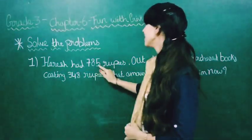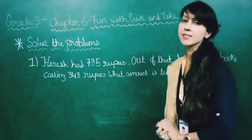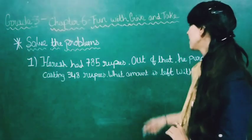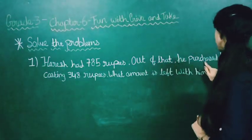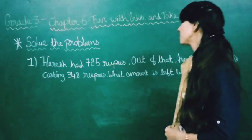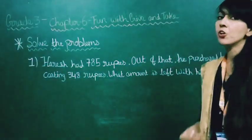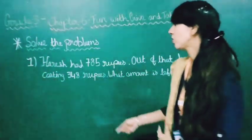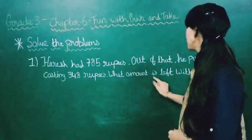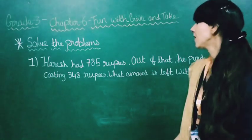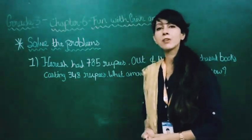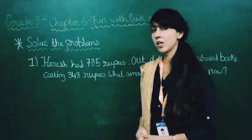Harish had 785 rupees. Out of that, he purchased books costing 348 rupees. What amount is left with him now? Let's find out.